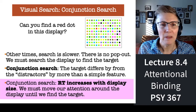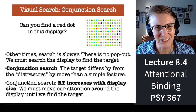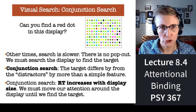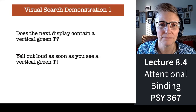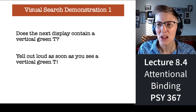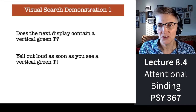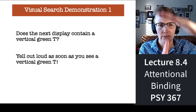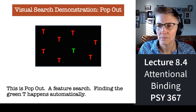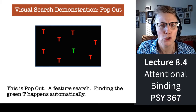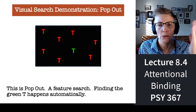The best way to teach this stuff is for us to do it ourselves. I'm going to show you a bunch of displays and I want you to yell out — or use your inner voice if you're somewhere you can't yell — as quickly as you can. Does the next display contain a vertical green T? You found it right away. Super simple. That's a feature search — it doesn't require attention, the thing just jumps right out at you.